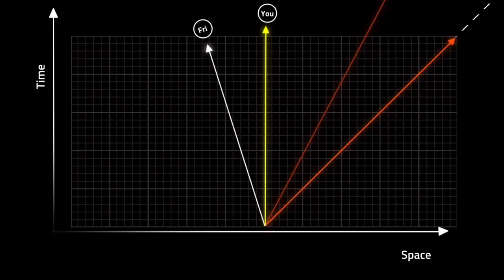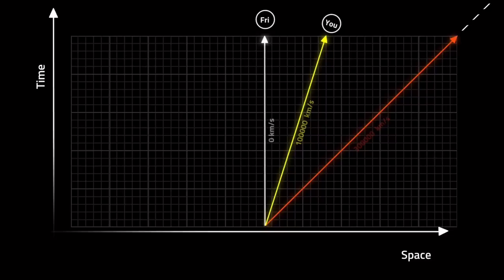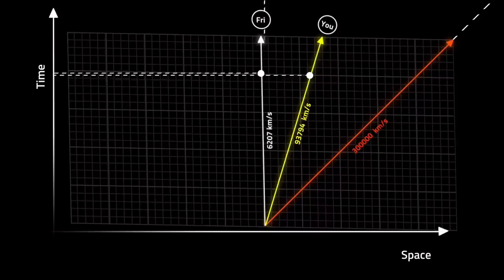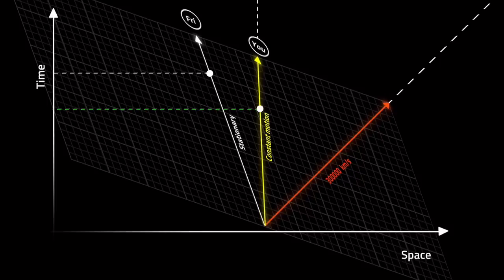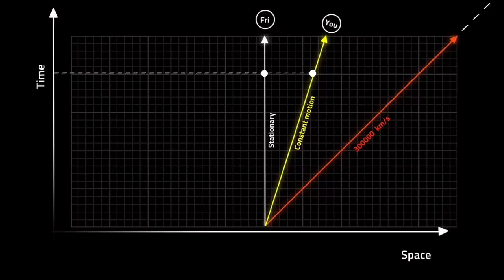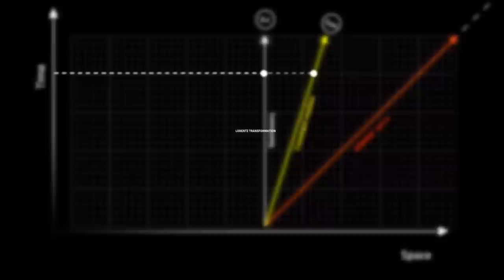To maintain the same speed of light for all observers, we can't rotate space-time — instead we need to stretch space-time. If we stretch space-time instead of rotating it, we can maintain the speed of light at the same rate. While trying to maintain the speed of light constant for all observers, not only space but also time stretches or contracts. Space and time are not the same for all observers. This sliding and stretching is called the Lorentz transformation — so space and time are not absolute, but relative.